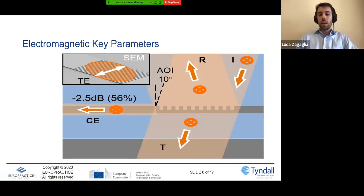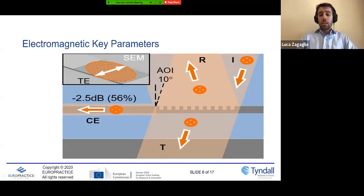The other key parameters are related to the electromagnetic field that strikes the grating coupler. First of all, the polarization — in this case, the electric field oscillates in a direction that points out of your screen. The mode has a dimension that fits the geometrical dimension of the grating and has a certain angle of incidence. In this way we are able to couple the light inside the waveguide — the CE channel, or coupling efficiency — and reduce losses due to back reflection (the R channel) and light that passes through the grating without interacting with it (the T or transmission channel).